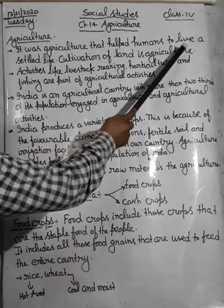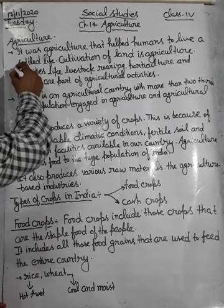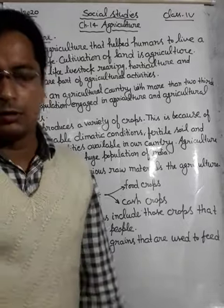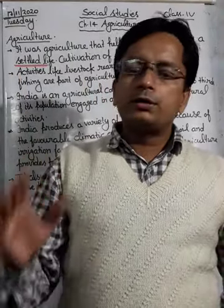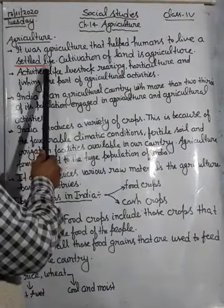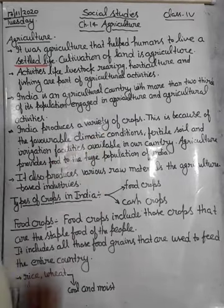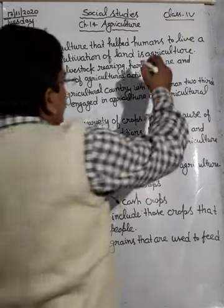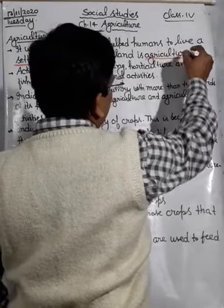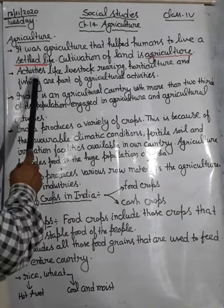Let's start today's class. Agriculture helped humans to live a settled life. In a settled life, people have their permanent house. The cultivation of land is agriculture — this is the definition of agriculture.